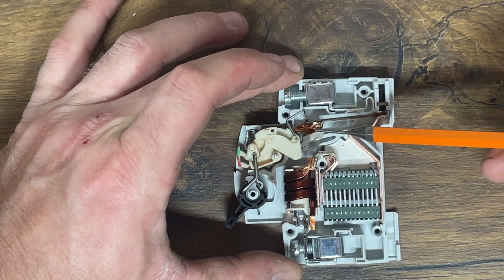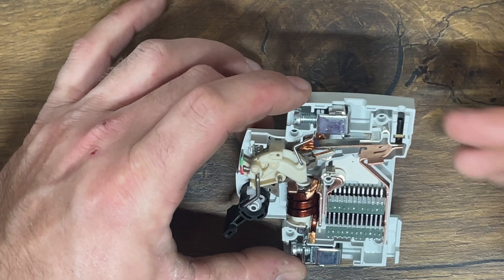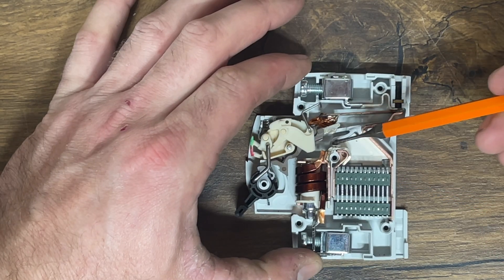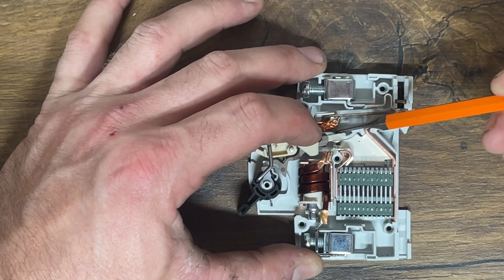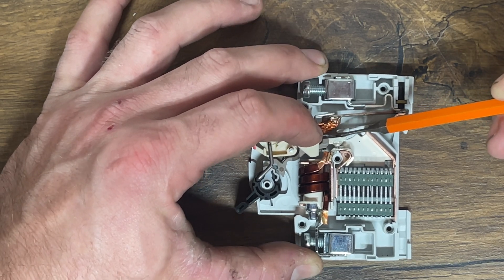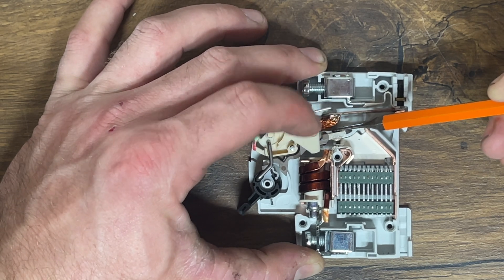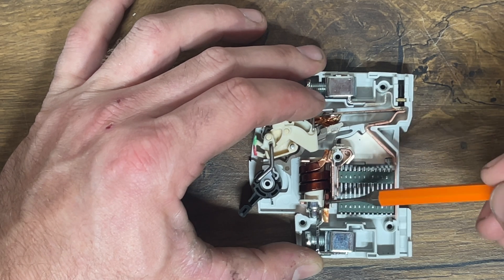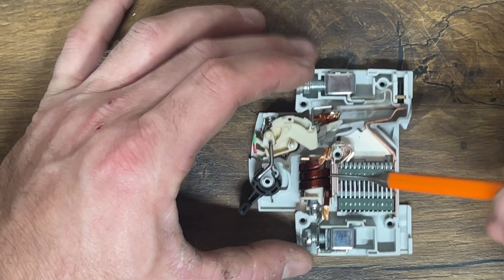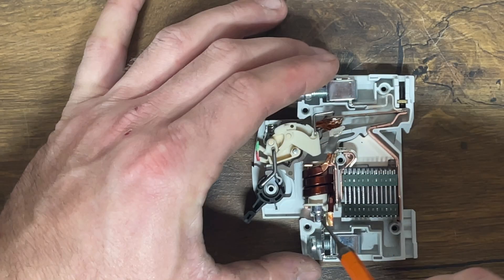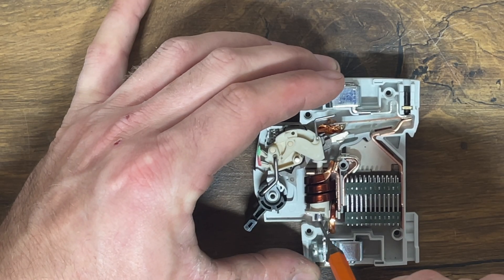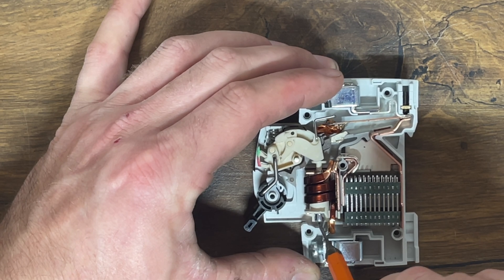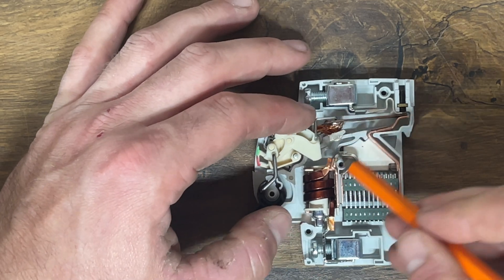We then have our two contacts, of which one is connected to our biometallic strip with a braided copper wire. There's quite a small gap between these contacts, but it doesn't take much for this trip device to operate. It's almost on the brink of wanting to flick and disconnect at any one time. But when you've got that biometallic strip, all it takes is for that to bend enough to pull that mechanism over and break that connection, or for the solenoid to push it from above, which shows you how both parts of those mechanisms work in order to flick that contact away from the other one.